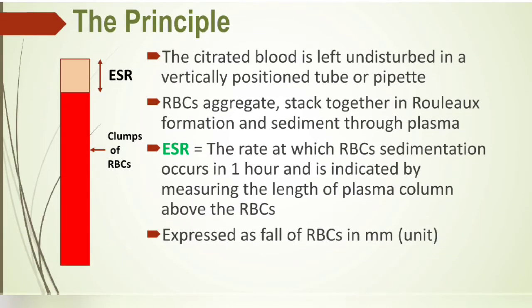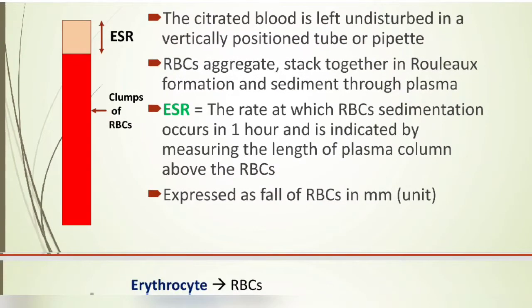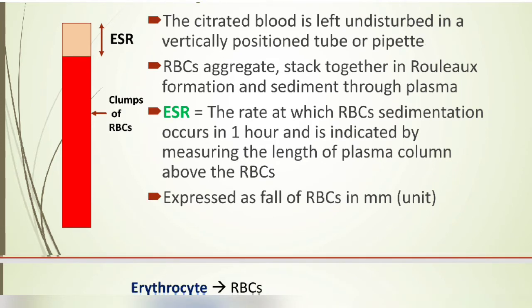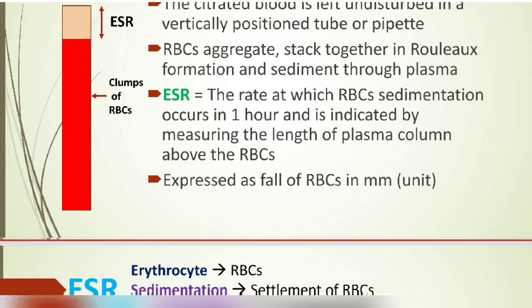The principle: citrated blood is left undisturbed in a vertically positioned pipette for one full hour. RBCs aggregate downward in a rouleaux formation and sedimentation occurs, while plasma remains in the upper position. ESR is the rate at which RBC sedimentation occurs in one hour, measured by the length of the plasma column above the RBCs. The unit is mm per hour — the upward plasma portion is the ESR reading and the downward reddish portion is the clumped RBCs.